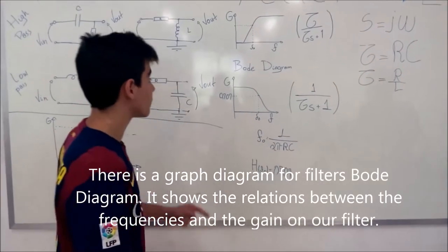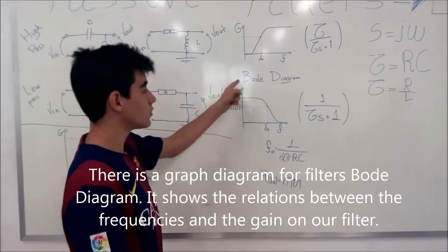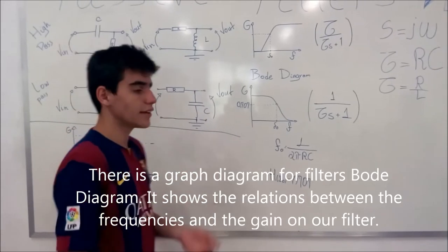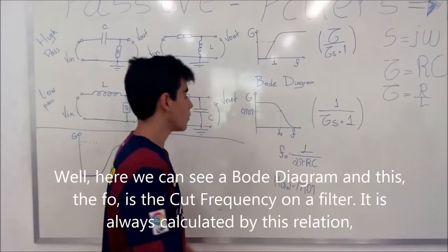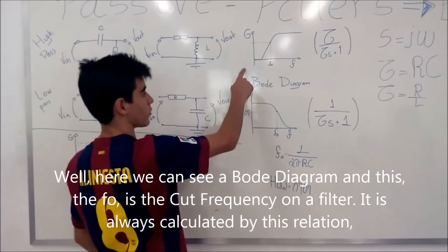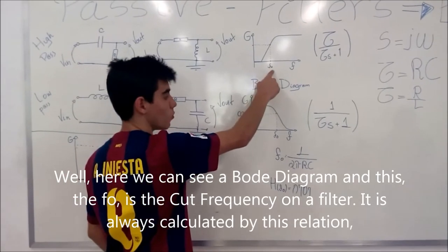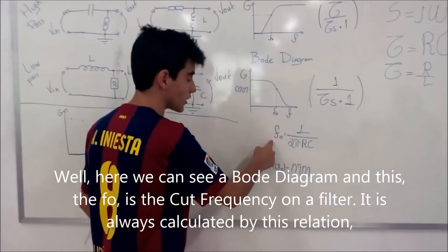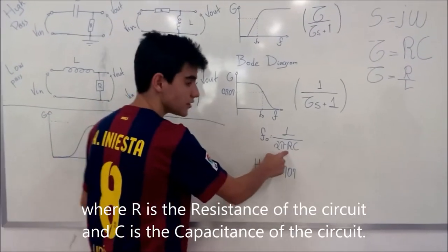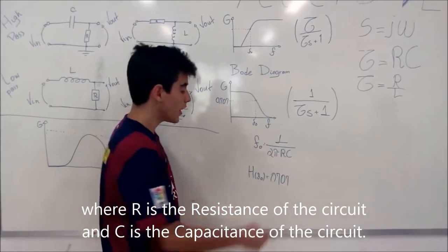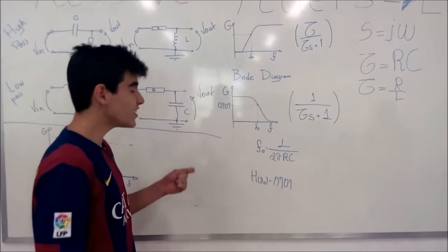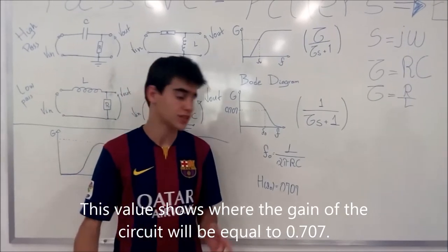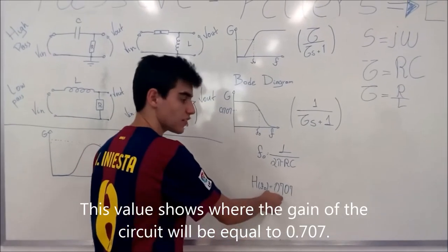There is a graph diagram for filters that is called a Bode diagram. It shows the relations between the frequency and the gain on a filter. Here we can see a Bode diagram. And this, the F0, is the cut frequency on a filter. It is always calculated by this relation, where R is the resistance of a circuit and C the capacitance of a circuit. This value shows where the gain of a circuit will be equal to 0.707.